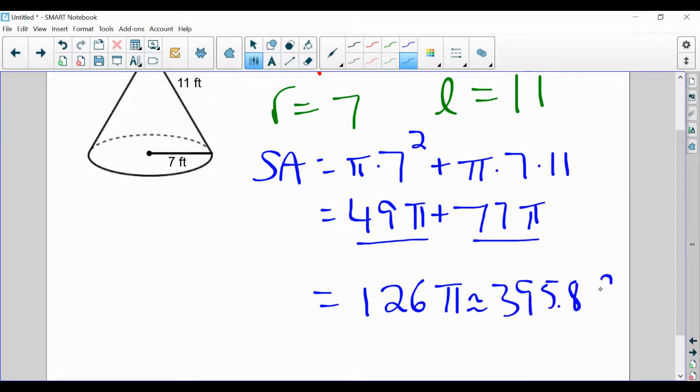So 395.8. And the units, it's not feet, it's not feet cubed. It's area. So it's feet squared. 395.8 feet squared.